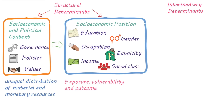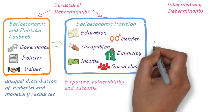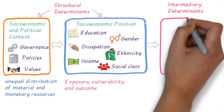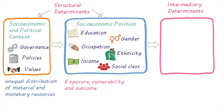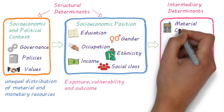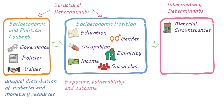The socio-economic position in turn affects the intermediary determinants of health. These include material circumstances, like the quality of housing, the financial means to buy healthy food, clothing, or other requirements for healthy living, and also the work environment.